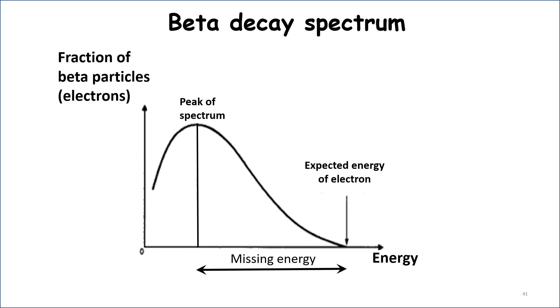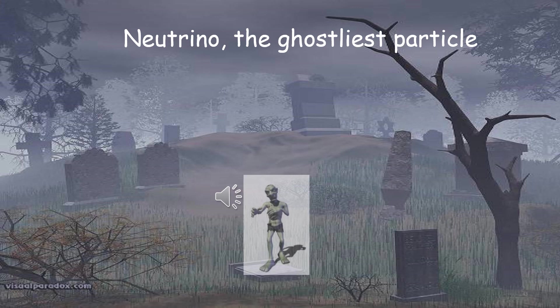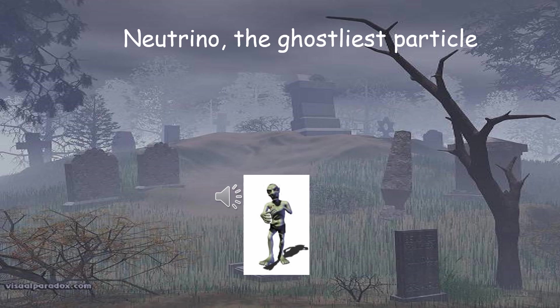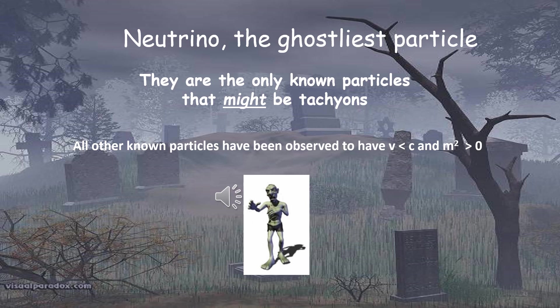Wolfgang Pauli is the one who solved this missing energy problem by suggesting that some unobserved, very small mass neutral particle was emitted along with the electron and carried off some of the energy. Pauli called this missing particle the neutron, a name that was later changed by Enrico Fermi to neutrino, meaning little neutral one in Italian. The neutrino is the ghostliest of all the known particles, given the great difficulty in observing them. They are also the only known particles that might be tachyons. That's because all the other particles that we know of have been observed to have a velocity less than light, or a mass that is definitely not imaginary. In contrast, neither is true for the neutrinos.